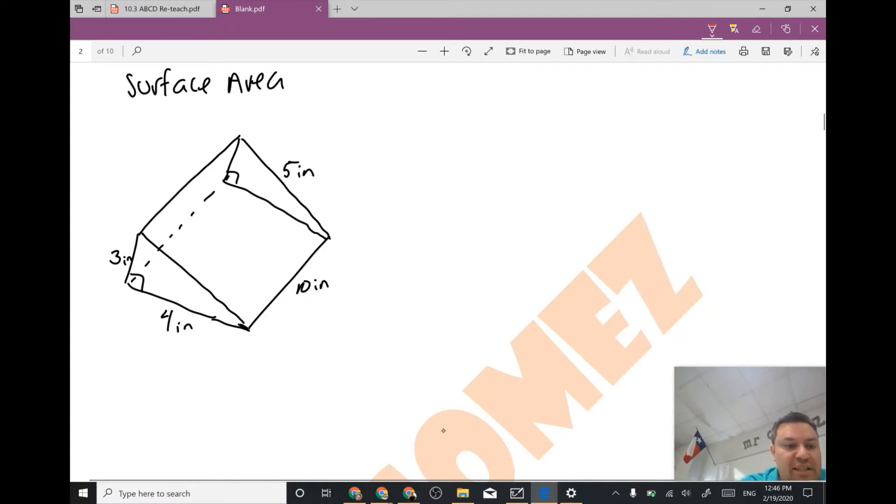In this case my base is going to be this triangle right here and I'm going to draw it on the side and label it. This is a 4 by 3 and these are inches. Now I am also given this length height and we're going to need that later on to find the area of the other things.